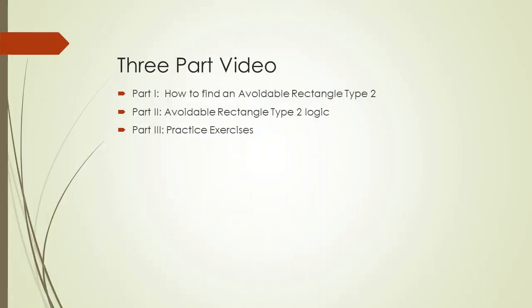This video is composed of three parts. The first part shows you how to find an Avoidable Rectangle Type 2 pattern in a Sudoku puzzle. The second part shows you how the logic of an Avoidable Rectangle Type 2 pattern works. And the third part is a set of practice exercises so you can master this technique.